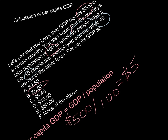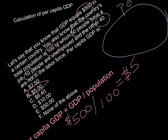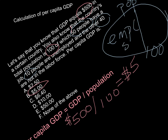By the way, if you're curious about how it all works with total population and labor force and so forth — if this was your country, that's the whole total population, so all the people in the country, that would be the total of 100. If 50 of those are working, those would be the employed people. You've got 10 people who are unemployed, and the 10 and the 50 make up your total labor force.